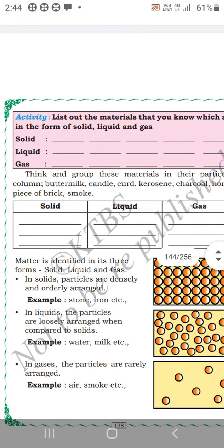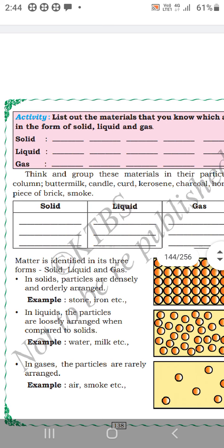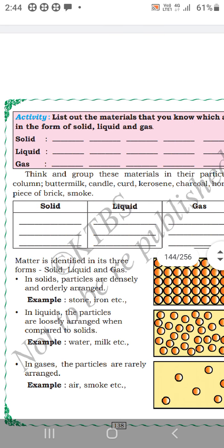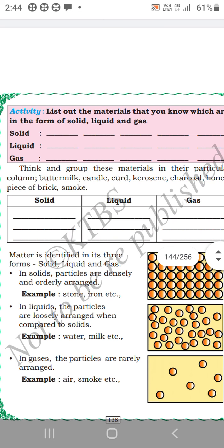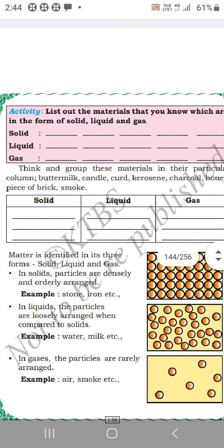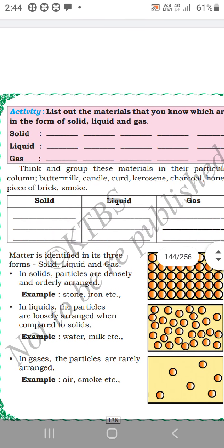Three kinds of matter: solid, liquid, and gas. In solids, particles are densely and orderly arranged. In liquids, particles are loosely arranged when compared to solids. In gases, particles are rarely arranged. Matter is identified in three forms: solid, liquid, and gas. In solids, particles are densely and orderly arranged.